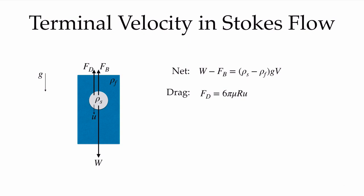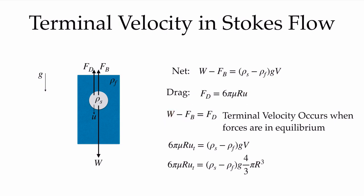Now let's talk about the terminal velocity in Stokes flow. Stokes flow is a flow where we have a particle in a very viscous fluid subject to viscous forces. If the density of the solid is greater than the fluid, we get motion in the downward direction with velocity u, and as soon as we have motion we get a drag force. In Stokes flow, where viscous forces dominate, we can solve for that drag force to be 6 pi mu times the radius of the sphere times the velocity. If the net force — weight minus buoyancy — equals this drag force, we reach equilibrium and that gives us the terminal velocity.